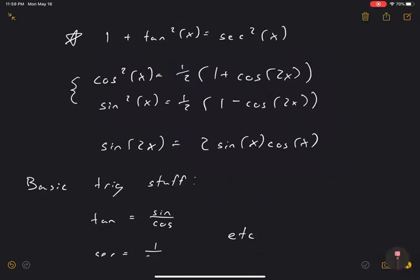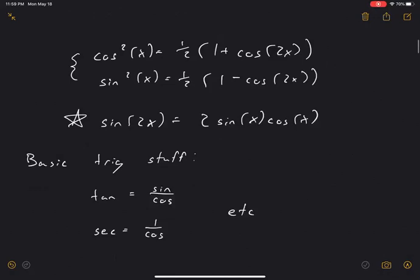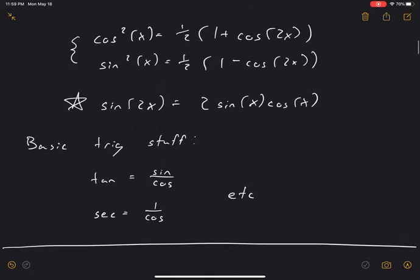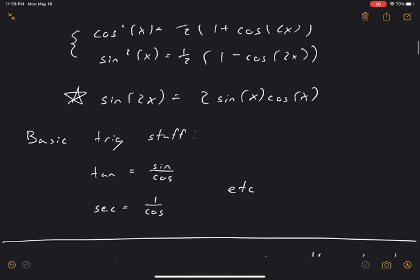This identity: sine of 2x equals two sine of x cosine of x. I put that there for completeness. I think it'll be more important in the next section, 7.3, maybe not so important in this section. And then we should also know some basic trig stuff like tangent equals sine over cosine, secant equals one over cosine, cosecant equals one over sine, that kind of thing.